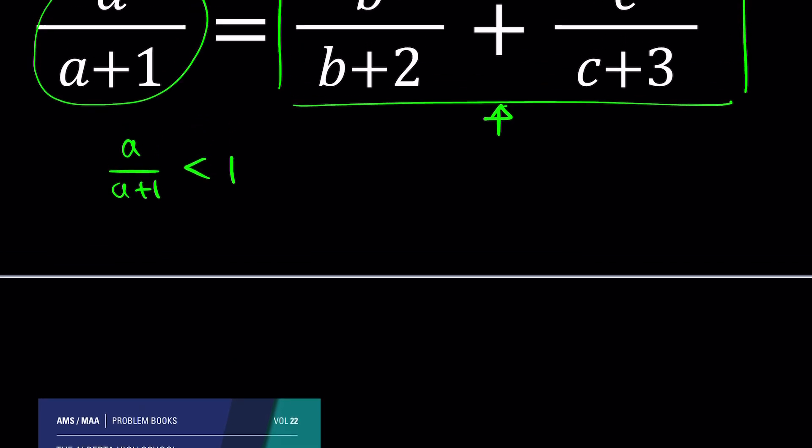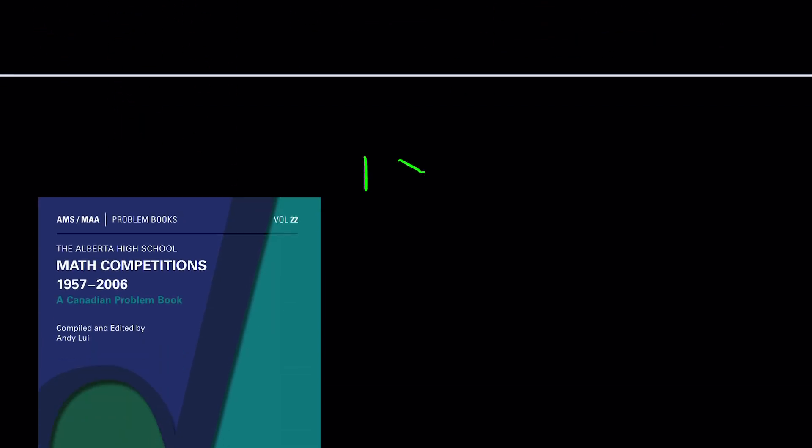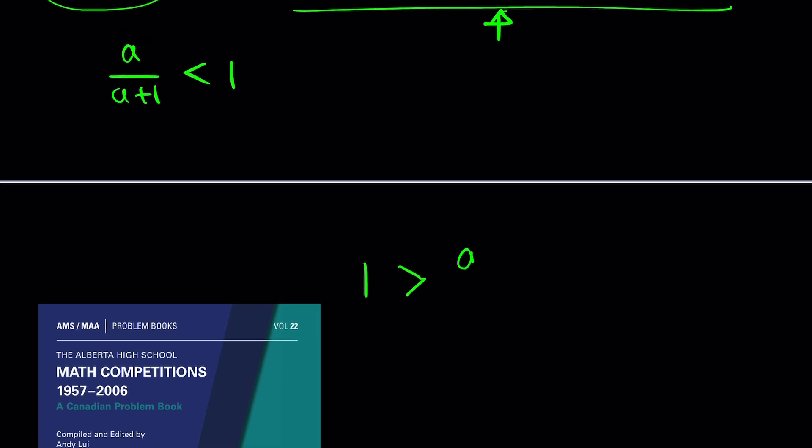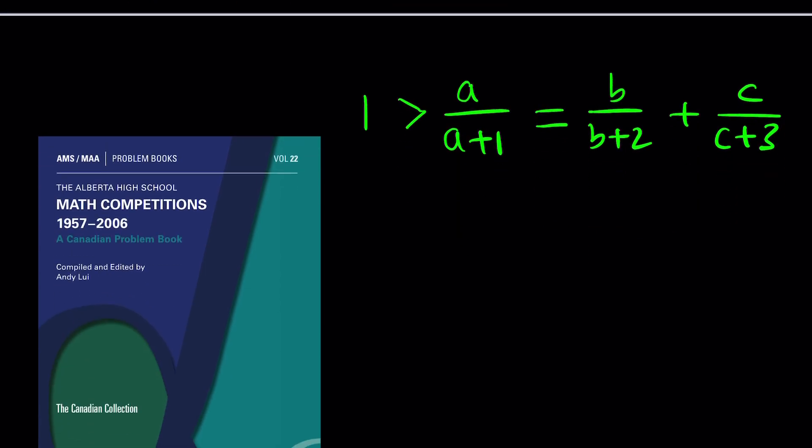Now, let's go ahead and start with one. Since a over a plus one is less than one, one is greater than a over a plus one, which equals b over b plus two plus c over c plus three. This expression is less than one. We could also do that at the very start. Now we're going to make a common denominator.